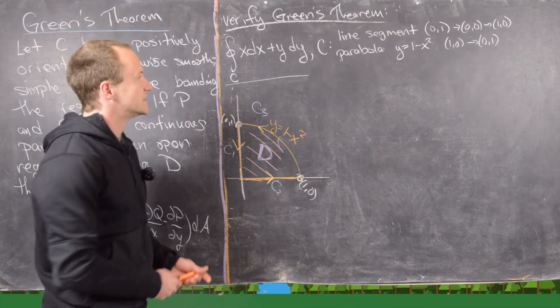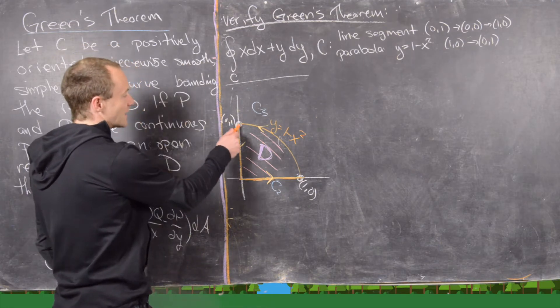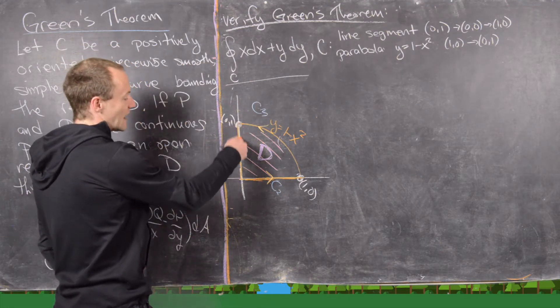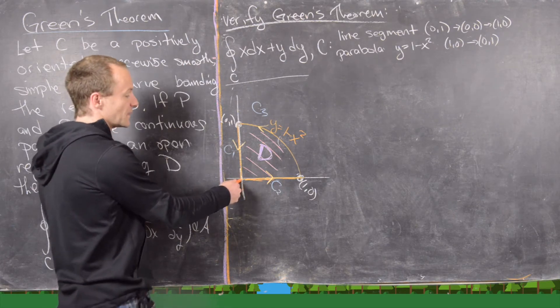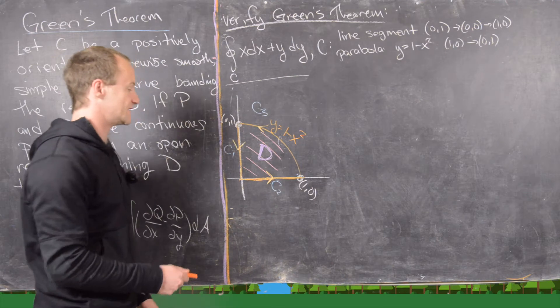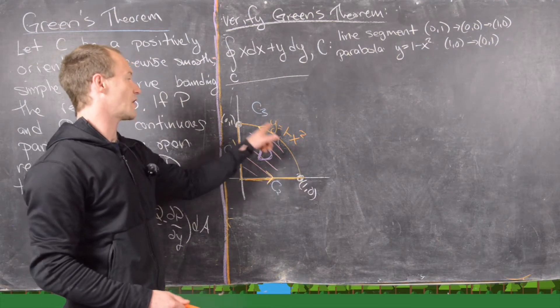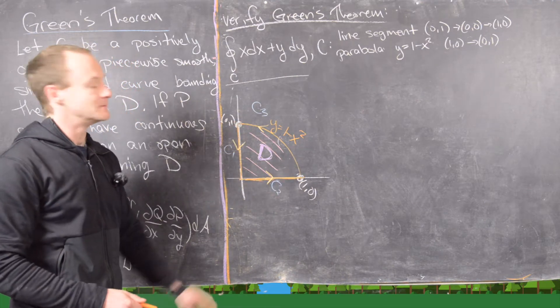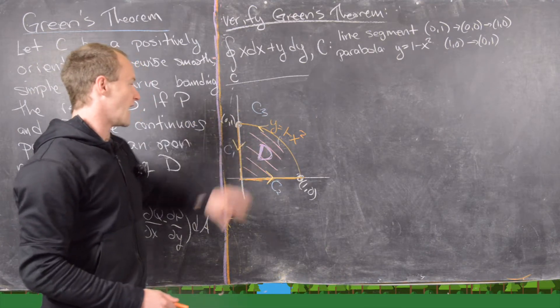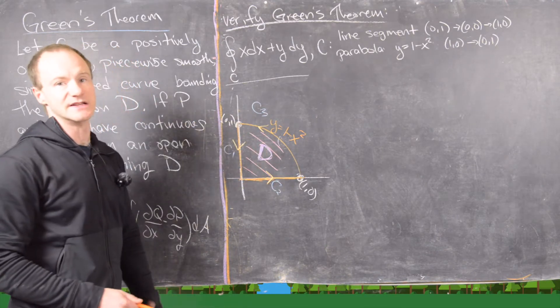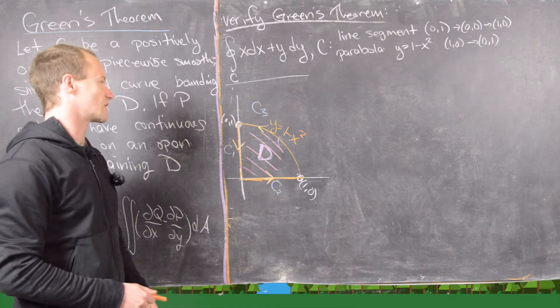So I've drawn a picture here. Notice we're starting up here at (1,0). We come down on this line segment to the origin. That's the first thing that we say we do. Then we go across here to the point (1,0) on this line, and then we go back up via the parabola. So this gives us this orange curve,